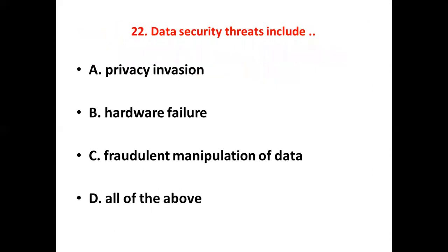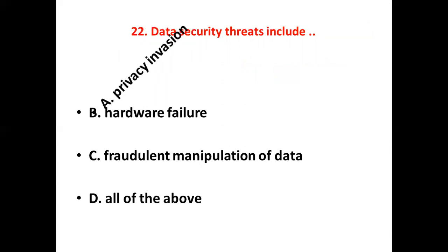22nd bit: Data security threats include dash. Option A, Privacy invasion. Option B, Hardware failure. Option C, Fraudulent manipulation of data. Option D, All of the above. The answer is Option A, Privacy invasion.